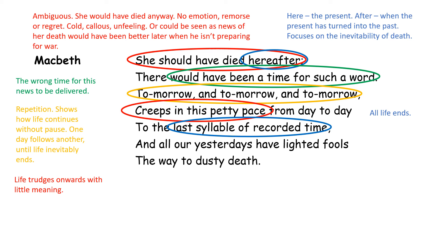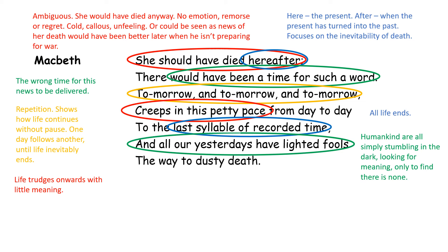'And all our yesterdays have lighted fools the way to dusty death' — he compares humankind to lighted fools, fools holding a candle desperately looking for light, desperately looking for meaning, looking for something important. However, we're all just simply stumbling in the dark, looking for meaning, only to find out that there is none. 'Creeps in this petty pace from day to day' gives that image of life trudging on and on for absolutely no reason, making life seem empty, meaningless, pointless. 'To the last syllable of recorded time' — at some point we have a last syllable, our time is over, suggesting that all life ends. This is a very pessimistic way of looking at life.